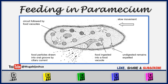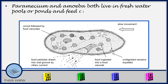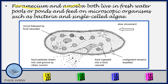Hello, my name is Joshua Mugavi. I welcome you to Feeding in Paramecium. Paramecium and Amoeba both live in freshwater pools or ponds and they feed on microscopic organisms such as bacteria and single-celled algae. We are looking at the feeding in Paramecium, and we are saying that Paramecium and Amoeba live in freshwater pools and feed on microscopic organisms like bacteria and single-celled algae.